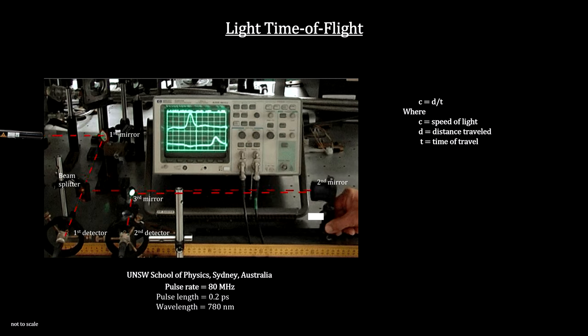The divisions on the horizontal axis are one nanosecond. The second pulse arrives several nanoseconds after the first because it has traveled a longer distance.